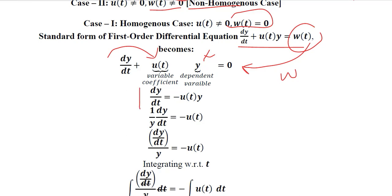This is dy over dt, and this is the term that we have shifted to the other side. And after shifting it, we are left with this expression. Y is something that can be shifted to the other side, and we have brought it to the other side, that is the left-hand side.